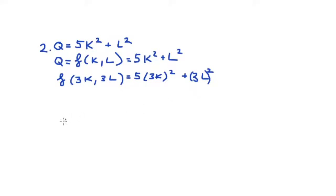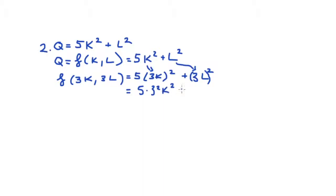Remember, every time I have capital or labor in my original function, I have to replace it with three times L and three times K. This example is good because it illustrates that I have to make sure all the operations done on our original levels of capital and labor now include the factor three. Distributing the power term, we get five times three squared times K squared plus three squared times L squared.